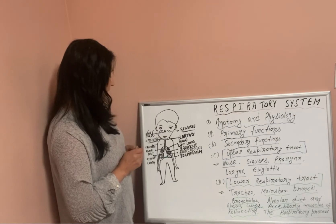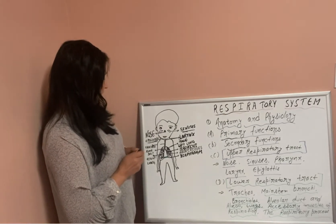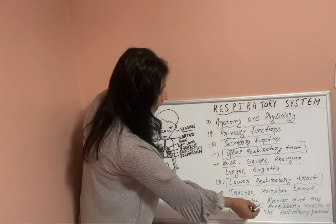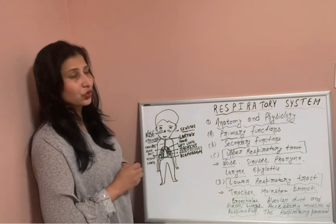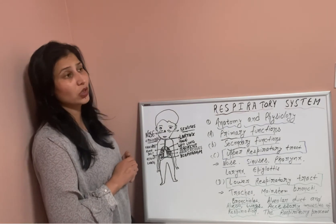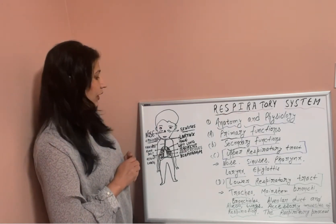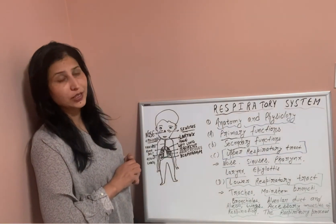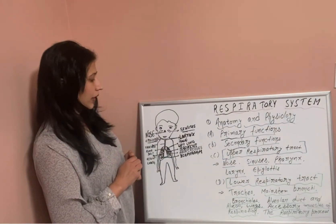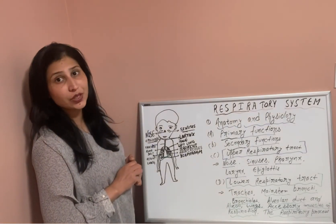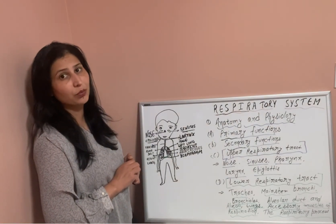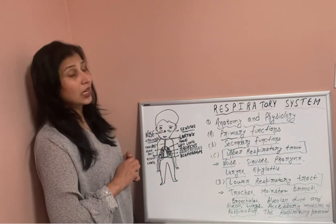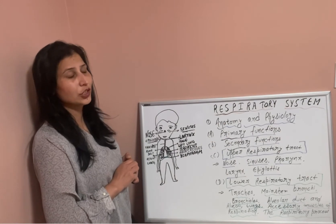The accessory muscles of respiration include the sternocleidomastoid muscles, located near the sternum, which assist in breathing. The diaphragm is the most important muscle in respiration and is primarily responsible for inspiration.